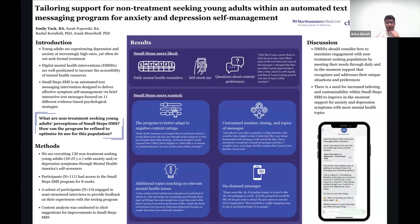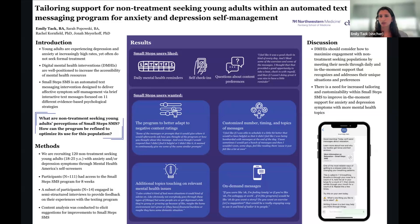Regarding next steps: participants were randomized to one of three different arms including machine learning within Small Steps, a randomized version, and a control. The trial is still ongoing, so data on how machine learning plays a role isn't available yet. Going forward, incorporating findings from participant interviews to make the program more customizable and better tailored to specific populations is the direction.